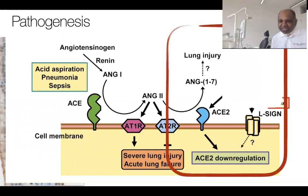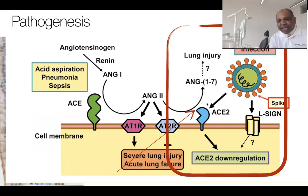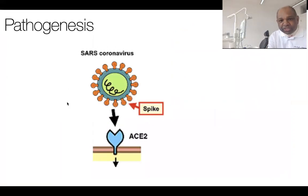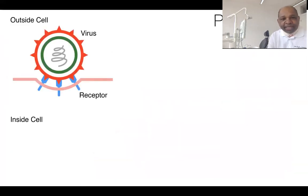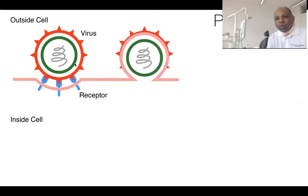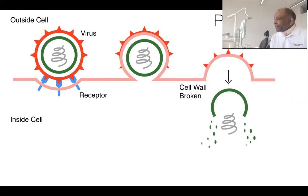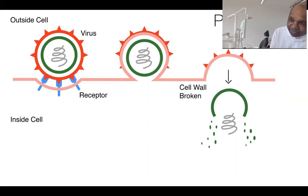If you look on the right side of the slide, you will see the ACE2 receptor. The spike of the virus itself attaches to this ACE2 receptor, almost like a key-lock system. You will see the spikes attaching directly onto this ACE2 receptor. The virus locks onto this ACE2 receptor, breaks down the cell wall of the host cell, then the RNA goes into the cell, takes over the action of the cell and replicates itself, thereby damaging the host tissue and causing death of the lung tissue. That's the main pathogenesis of this coronavirus.